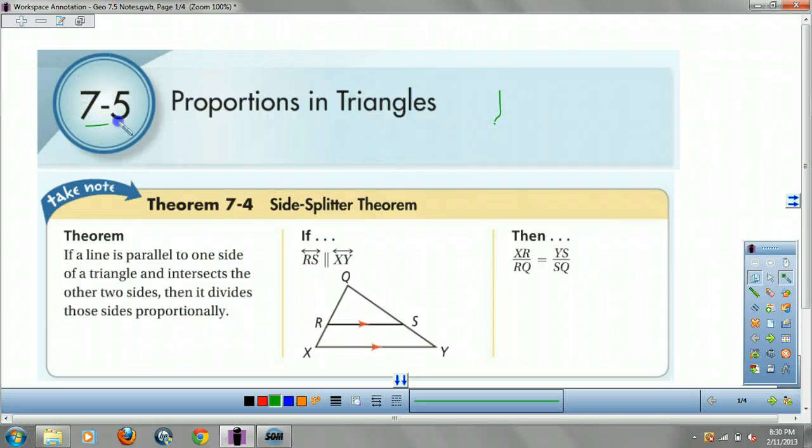How's it going, Geometry Cats? We are looking at 7-5 proportions in triangles. Last section in Chapter 7.